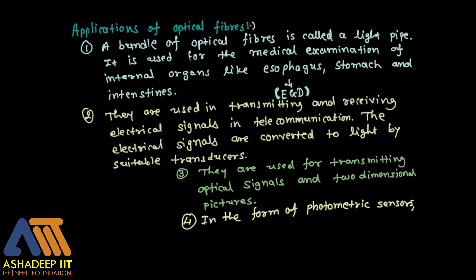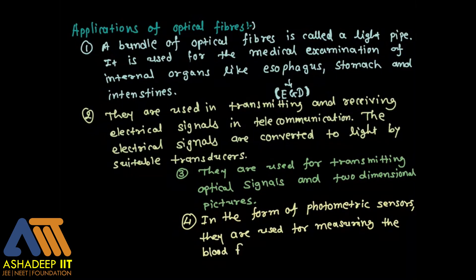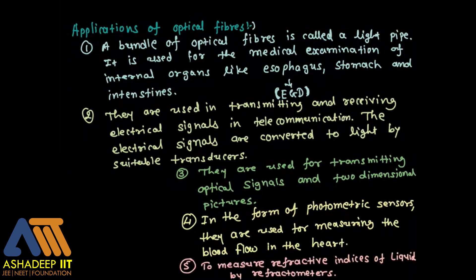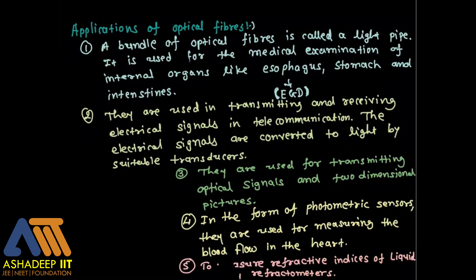Third, optical fibers are also used in transmitting optical signals and 2D pictures using photometric sensors, which can also be used to measure blood flow in the heart. They are used for measuring blood flow in the heart, and fifth, to measure the refractive indices of liquids in refractometers.